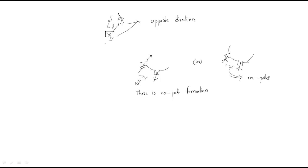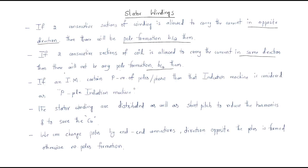Next: if an induction motor contains P number of poles per phase, then the induction machine is considered a P-pole machine. The stator windings are generally distributed as well as short pitch.